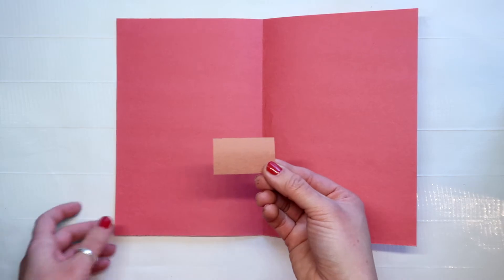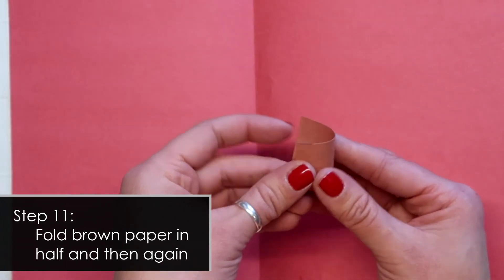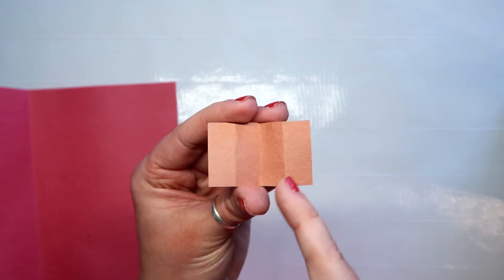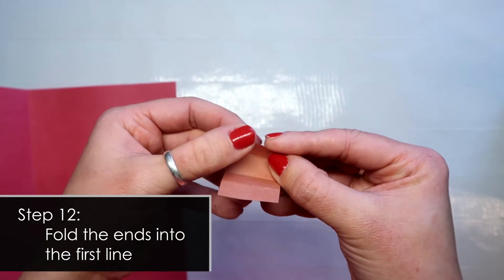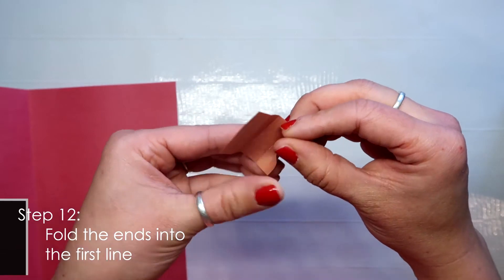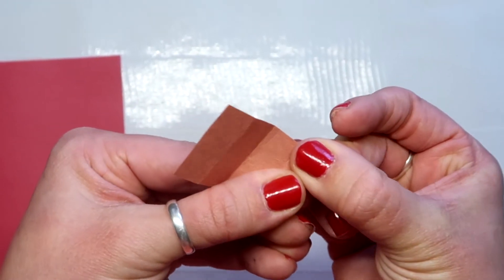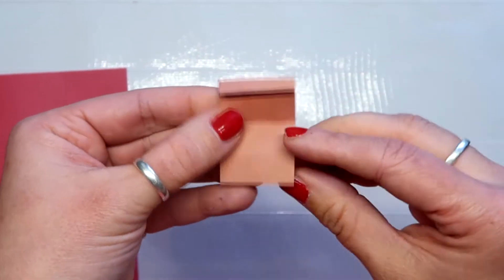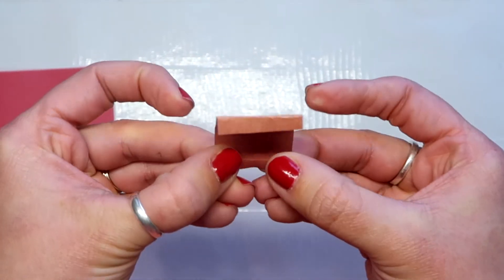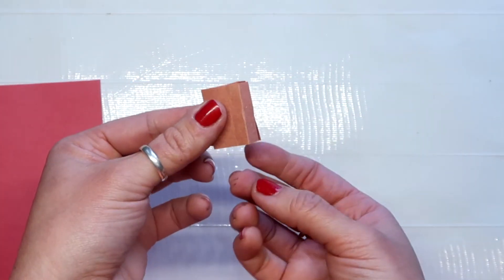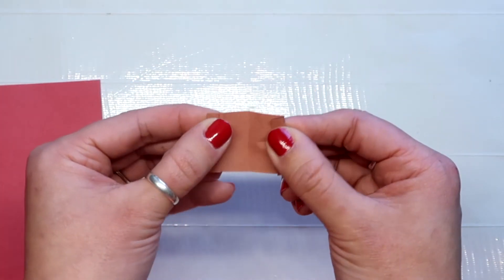I'm going to open that up and we want to put the base of the tree first. So we're going to take this and fold it in half and then you're going to fold it in half again. You can see the four lines. What you want to do is fold the end one, just in, inside to that first line. So I'm just folding it in a little bit. And then the same thing on this side.